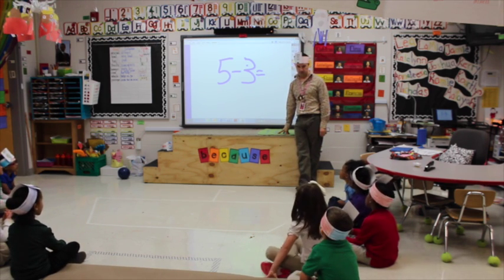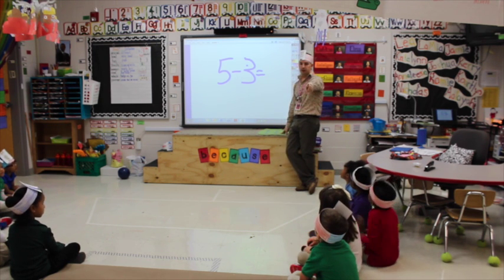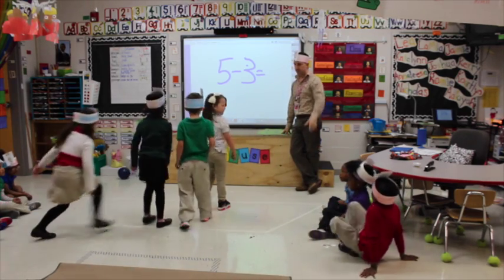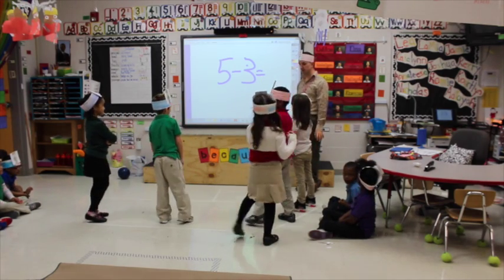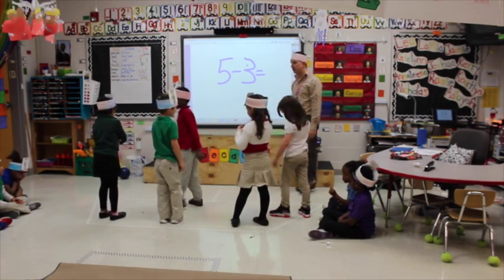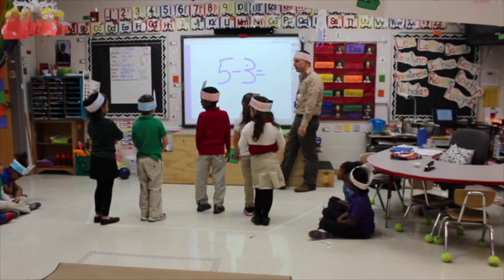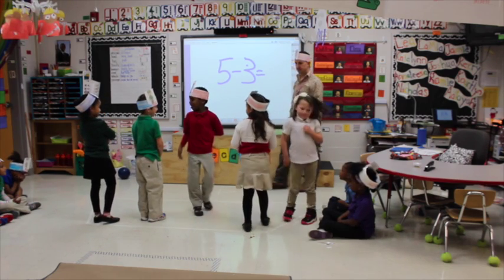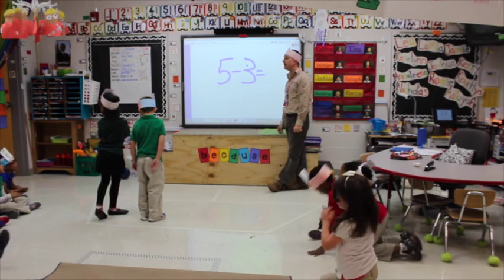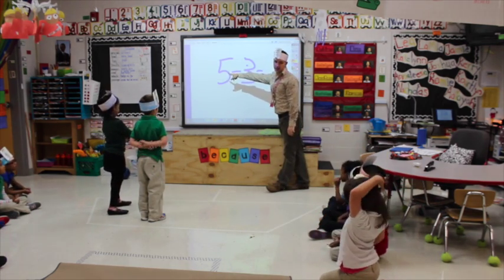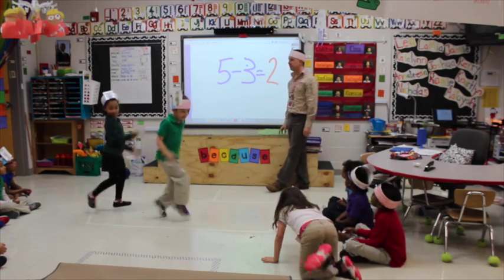Five minus three equals... Five. So how many people are getting on my boat? Five. One, two, three, four, five. Caitlin, how many people are getting off my boat? Three. Get off the boat. How many people are left, Caitlin? Two. Five minus three equals two. How many people are left on my boat? Two. Very good, thank you.